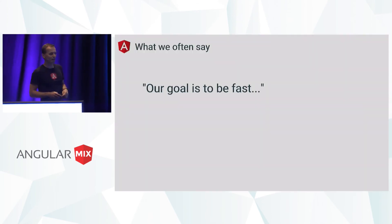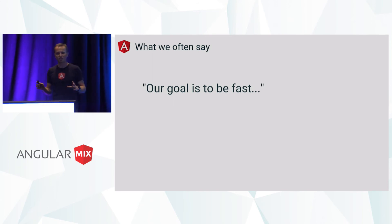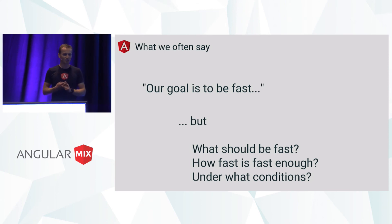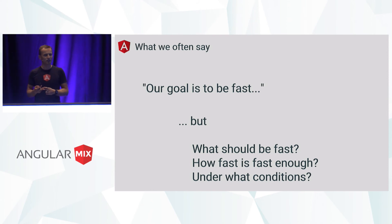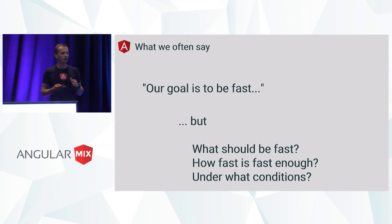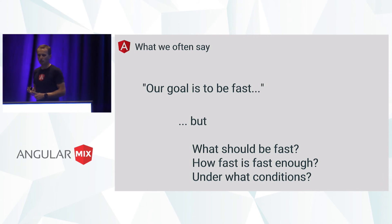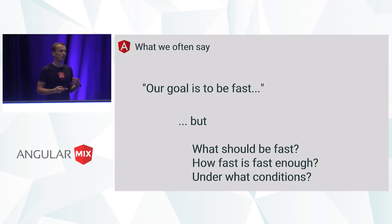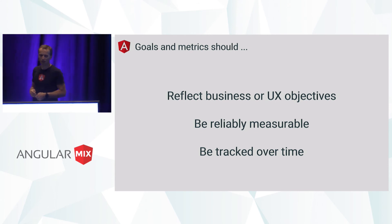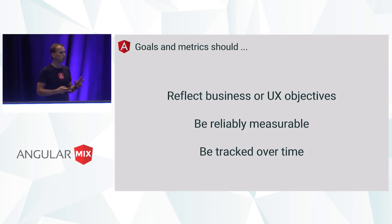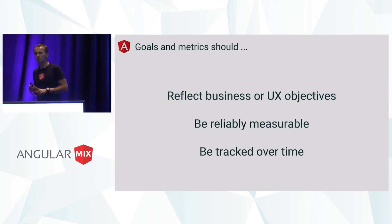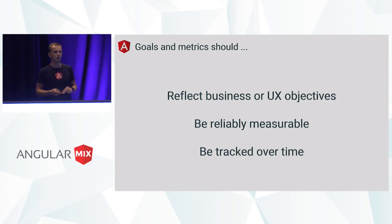There are many different things we can measure and track. Let's scope the discussion to performance. When we talk about performance, we often say we want things to be fast — but we often forget to specify what should be fast, how fast is fast enough, and under what conditions. Often when I discuss performance with teams, they don't have any formal or specified goals. They don't know what kind of devices their audience is using. They don't know what their current state is. So what makes a good goal or metric? I think there should be three criteria: the goal or metric should reflect some kind of business or UX objective, it should be reliably measurable, and we should track it over time and understand when there is a regression or progression and act on it.